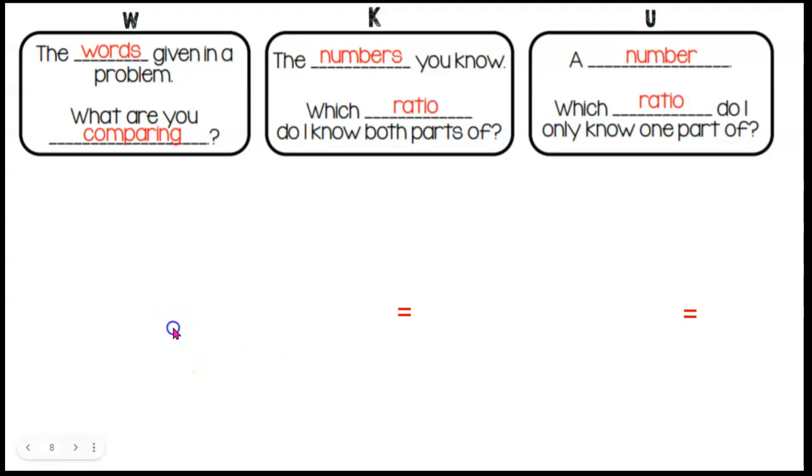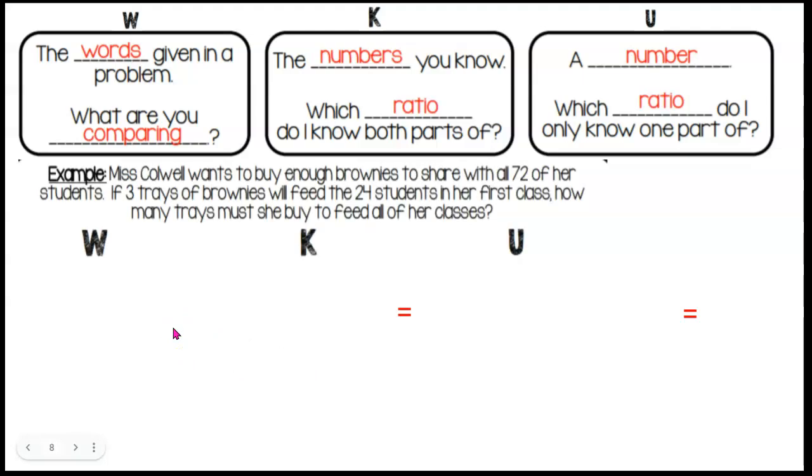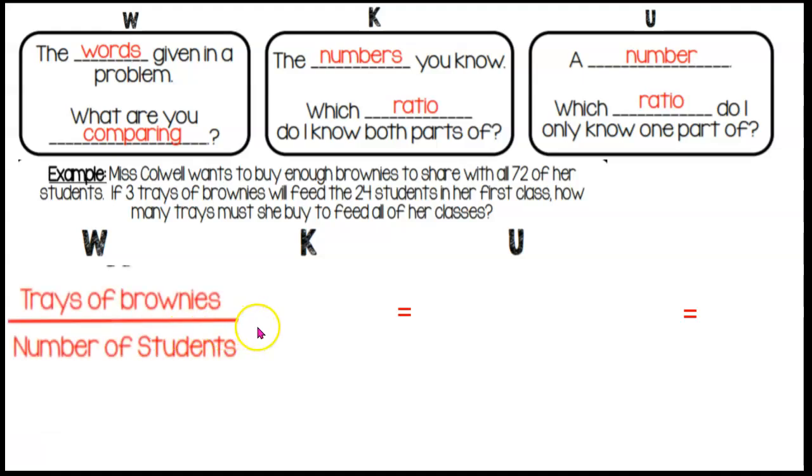Let's start our first question. Ms. Caldwell wants to buy enough brownies to share with all seventy-two of her students. If three trays of brownies will feed twenty-four students in our first class, how many trays must she buy to feed all of her classes? Our word ratio is trays of brownies and number of students. Those are the two things we're discussing in this problem. Our known ratio is the ratio that we know both parts of. We know that three trays of brownies will feed twenty-four students. Notice that I put the three at the top where I put trays of brownies and the twenty-four where I put students. Three represents the trays and twenty-four represents the students.